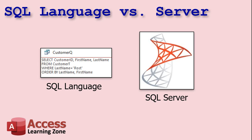Before we continue, it's important to note the distinction between the SQL language and SQL Server. The SQL language is what I've been talking about — it's an actual programming language where you can select data from tables, and it's found inside Microsoft Access and other products like SQL Server and MySQL. SQL Server is a specific server-based program from Microsoft that handles your data. So the two are different. When someone says they need to learn SQL, it's important to clarify which one they mean — the language or the server product.